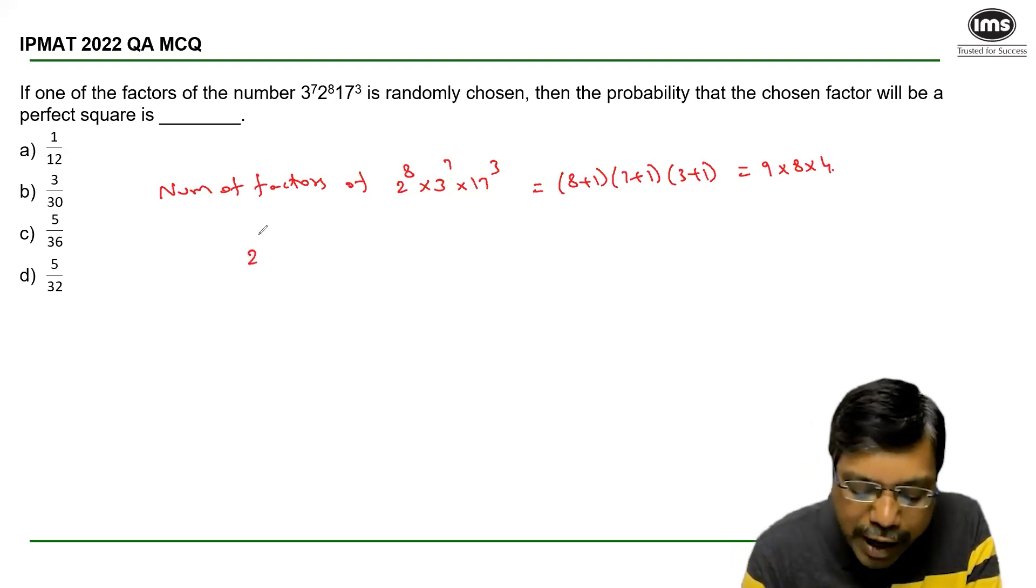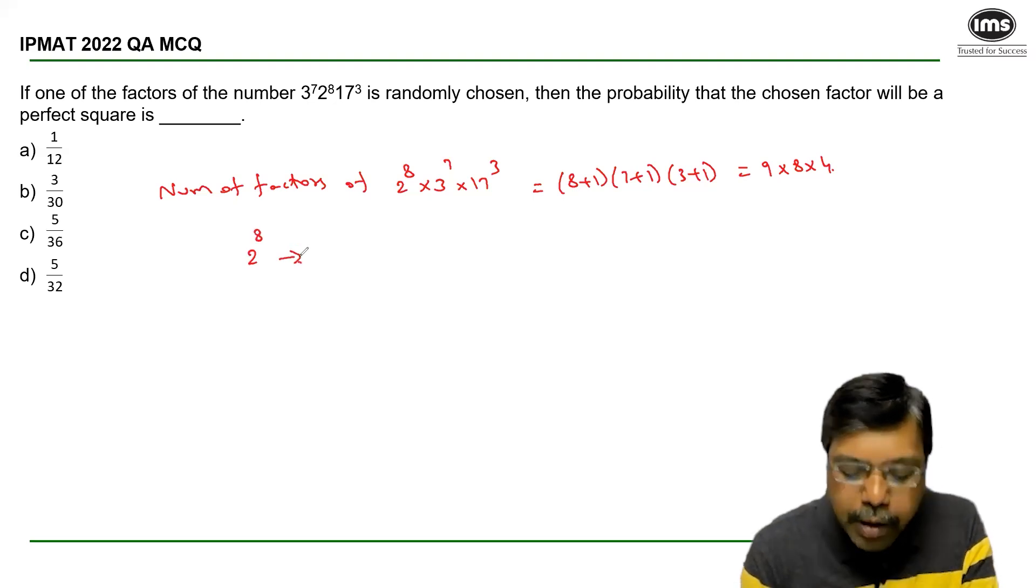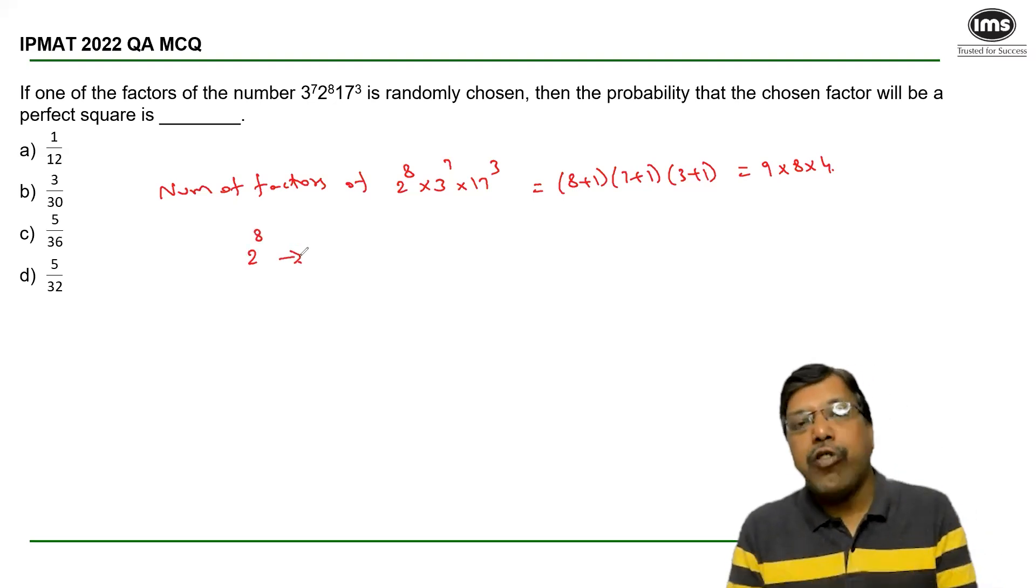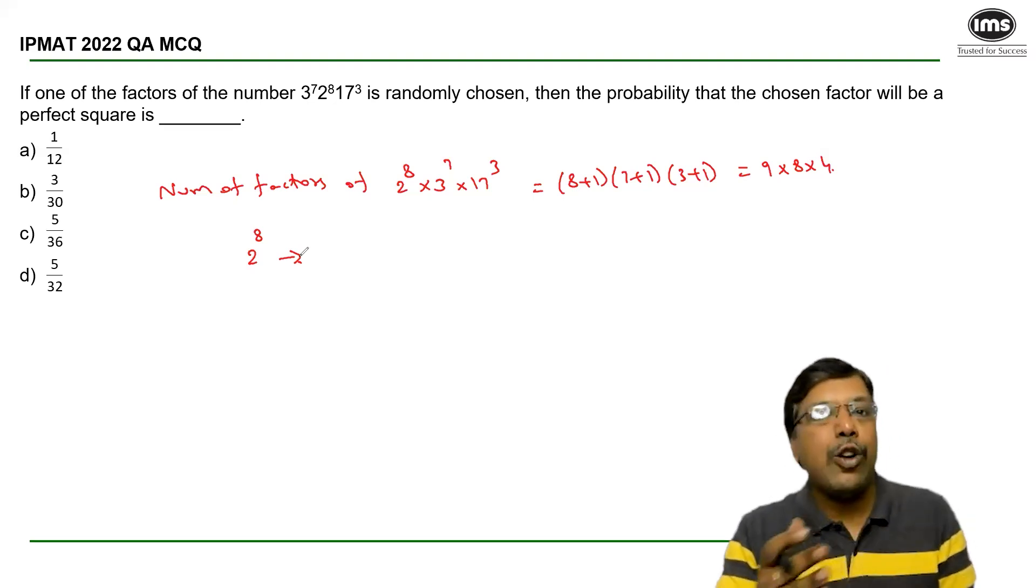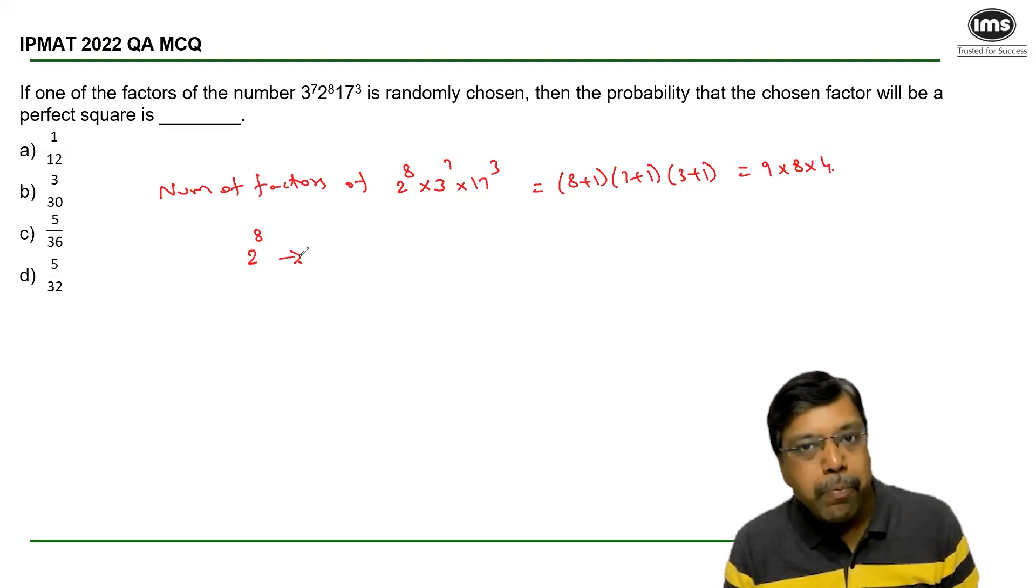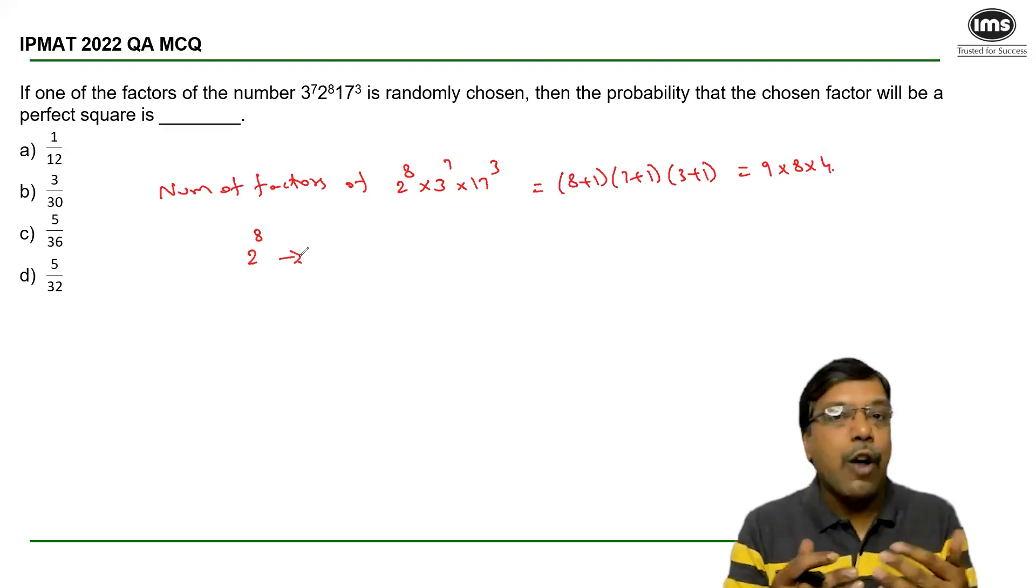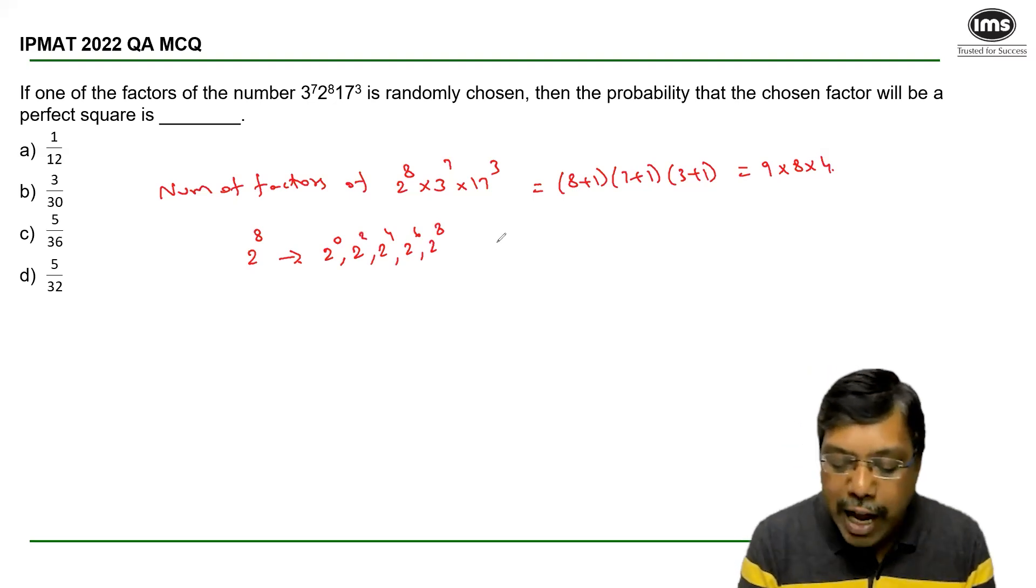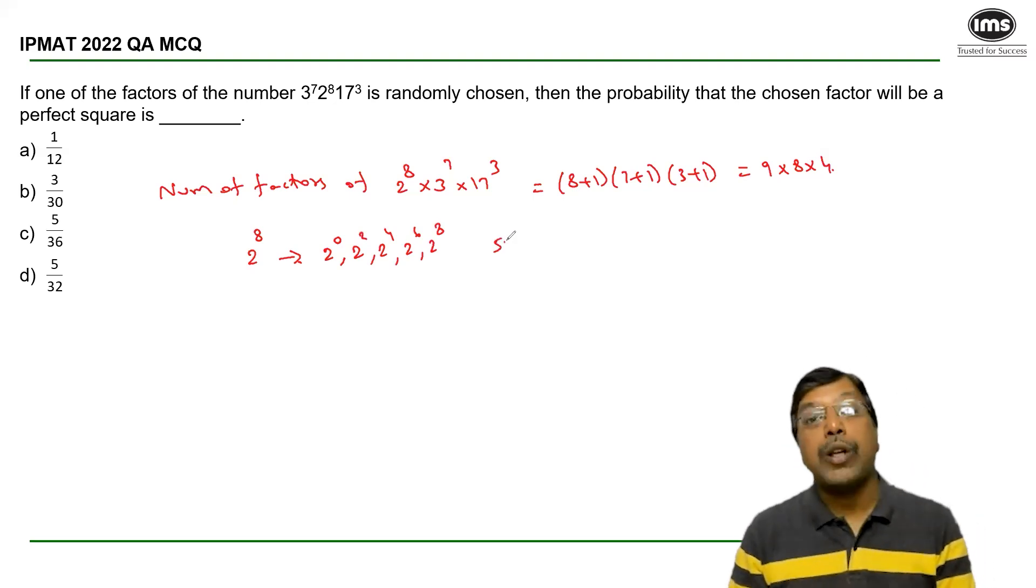So, if I take 2^8, when I take a factor of 2^8, it can range anywhere from 2^0 to 2^8. But in which cases will it be a perfect square? When it is 2^0 or 2^2 or 2^4 or 2^6 or 2^8. So, there are 5 possibilities.